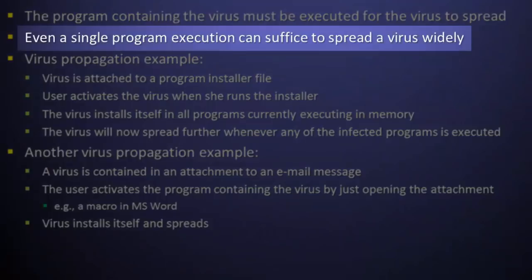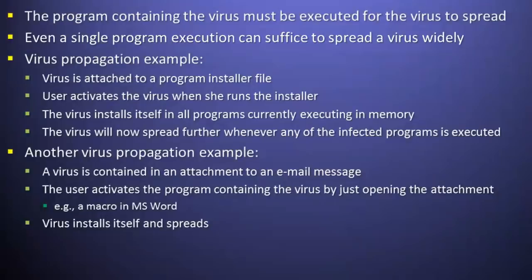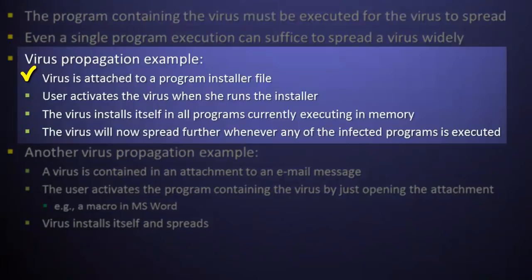Let's consider a few examples of virus propagation. First, imagine that a virus is attached to a program installer file. A user will hence activate the virus when he or she runs the installer program. After being activated, the virus might install itself in all of the programs currently executing in the system's memory. From this point, the virus will spread further whenever any of the infected programs is executed.